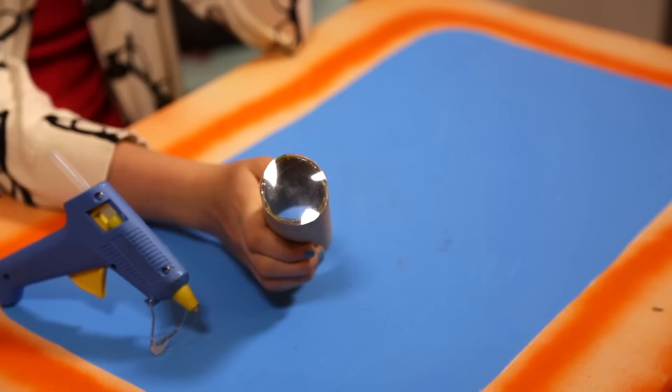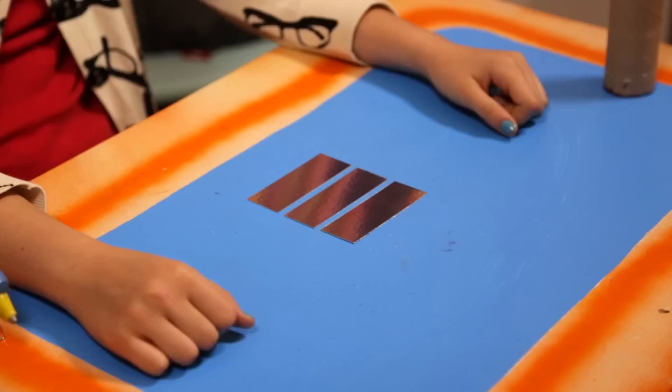Next, from mirror paper, cut three rectangles three and a half inches long and one and a quarter inches wide. Now tape them together to form a triangle with the shiny parts inside.